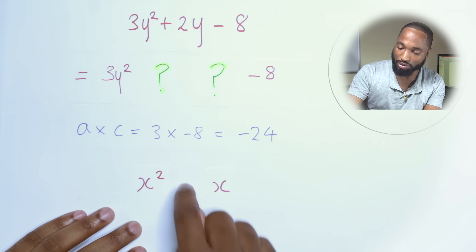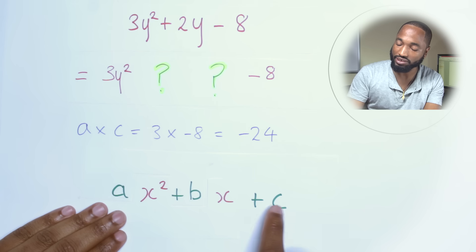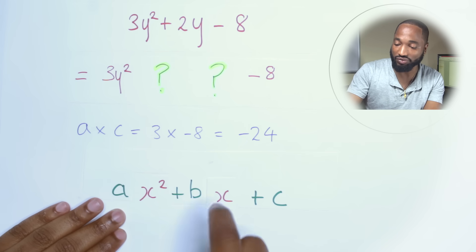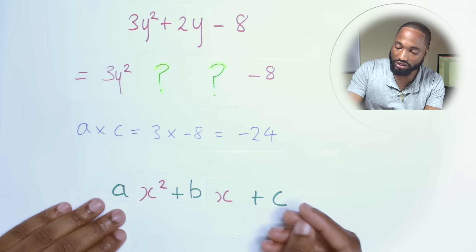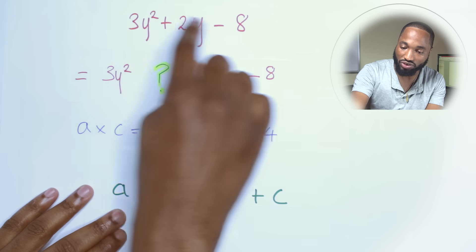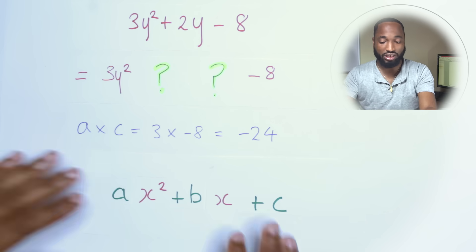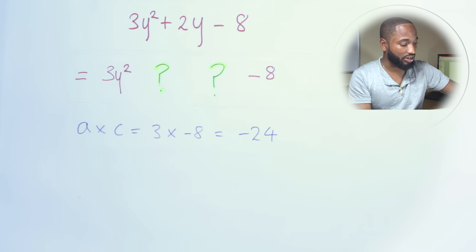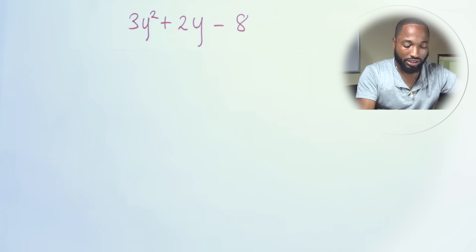A quadratic equation has the form ax² + bx + c. The 'a' is the coefficient — the number in front of x² — the 'b' is the coefficient of x, and 'c' is the constant, which stands by itself. So a and c represent 3 and −8 here because a is in front of x² and c is the standalone number. That's just the general form we use.